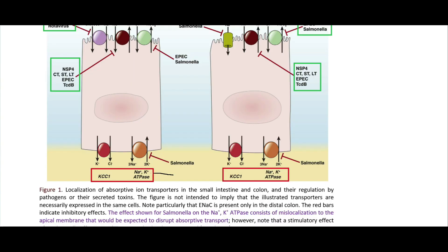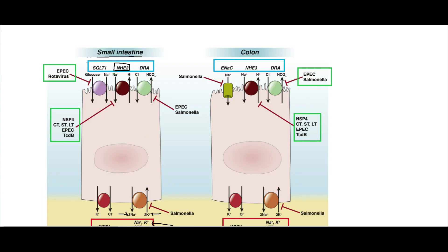Down here we have the sodium-potassium ATPase which, as the name suggests, requires energy - it requires ATP in order to pump three sodiums out of the cell and two potassiums into the cell. Most cells try to maintain a similar ionic composition which is usually low calcium, low sodium, and high potassium, and neutral pH. Over here we have this glucose-sodium transporter which I'll probably get to in a future video.